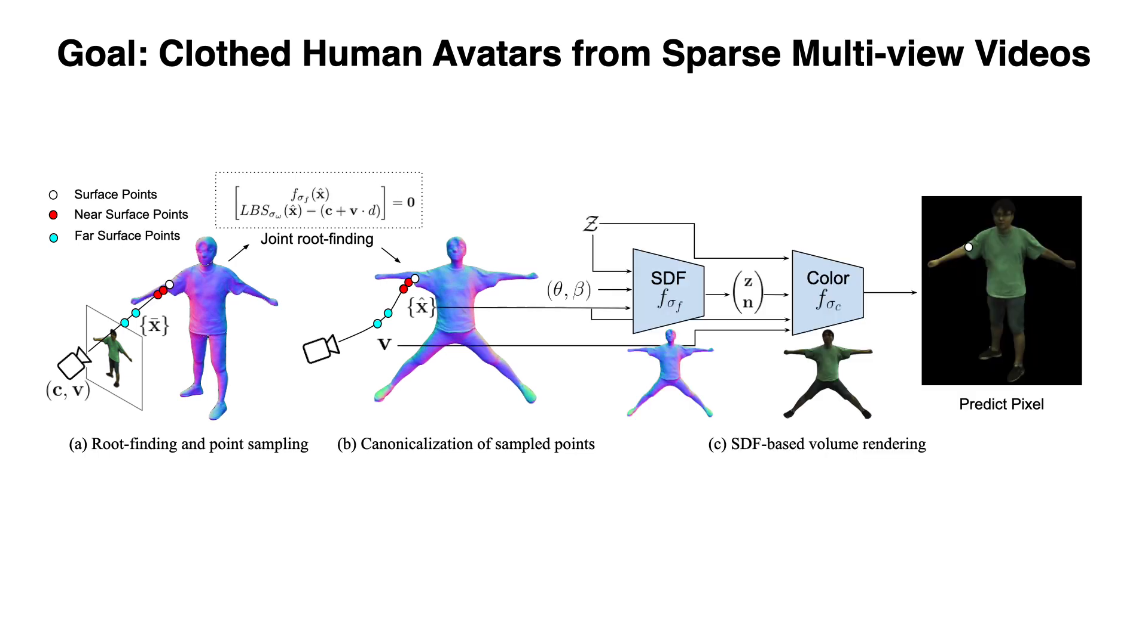With sampled points converted to canonical space, we leverage SDF-based volume rendering with the SDF network and a color network. All neural networks are defined in canonical space and can be trained end-to-end using only photometric loss. Our key technical contribution is the joint root-finding algorithm.